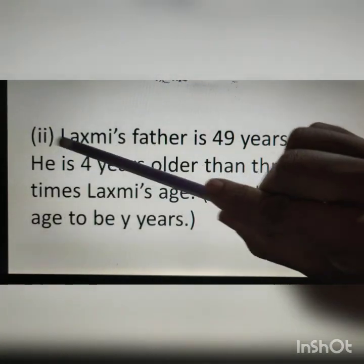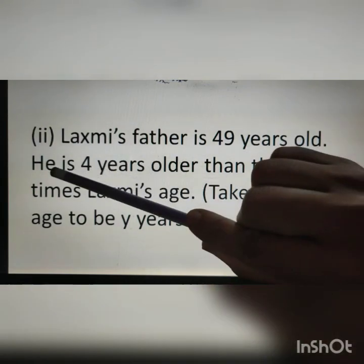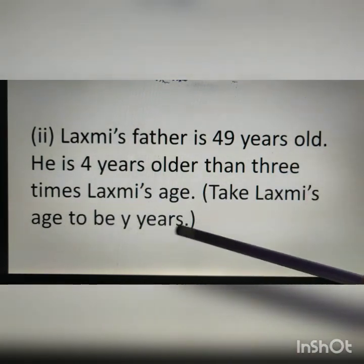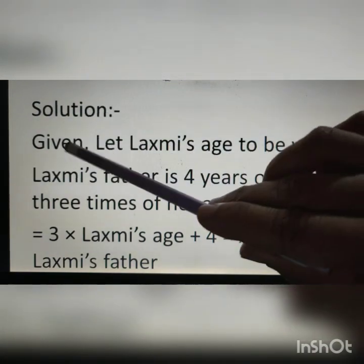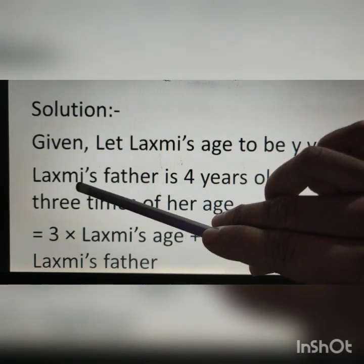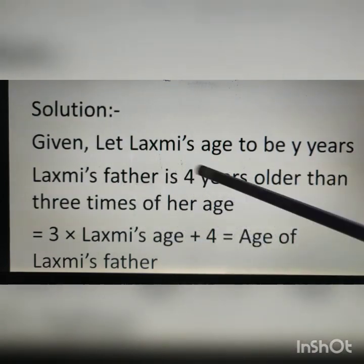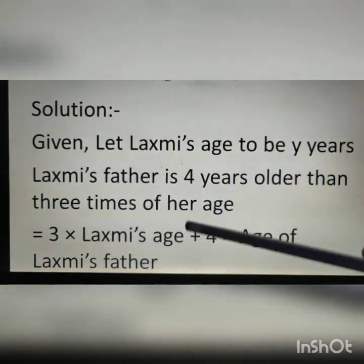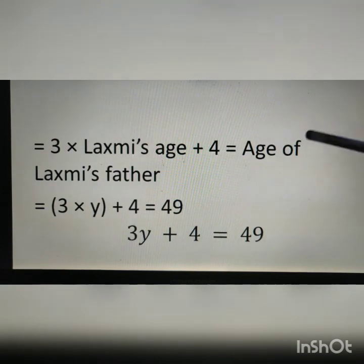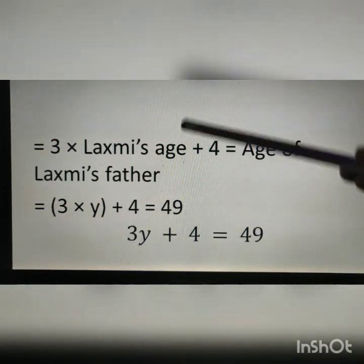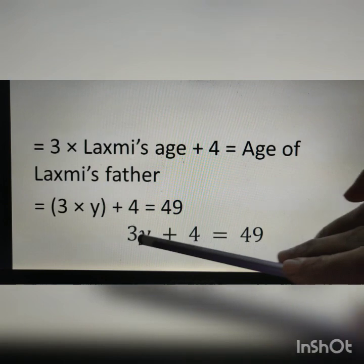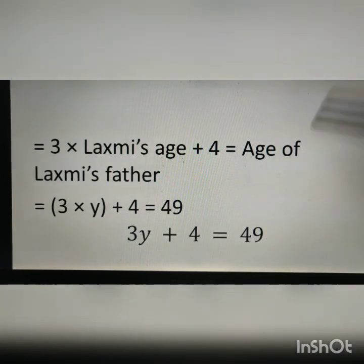Second question: Lakshmi's father is 49 years old. He is 4 years older than 3 times Lakshmi's age. Take Lakshmi's age to be y years. Solution: let Lakshmi's age be y years. Lakshmi's father is 4 years older than 3 times her age, so 3 into y plus 4 is equal to the age of Lakshmi's father, which is 49. Therefore, 3y plus 4 is equal to 49 is the equation.